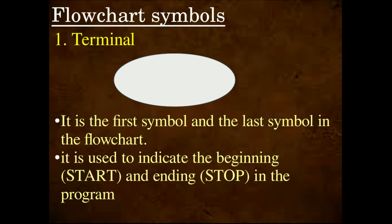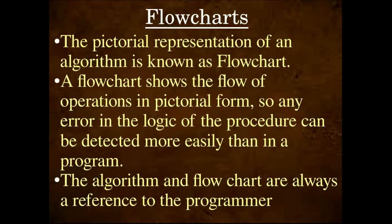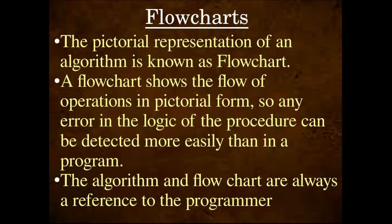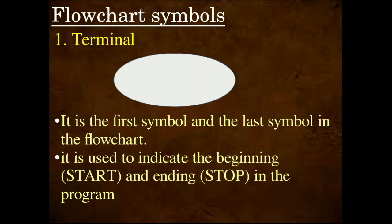We will consider the flowchart symbols. First: Start and Stop are the starting and ending steps. They are denoted by the terminal symbol — it is an ellipse, or oval shape. The ellipse is the terminal symbol; it is the first symbol and the last symbol in a flowchart. It indicates Start; if you mention Stop, it is also the same symbol.